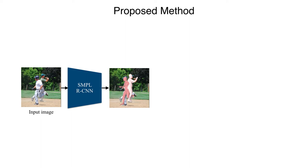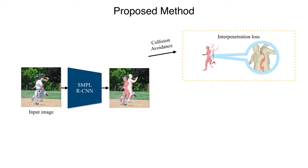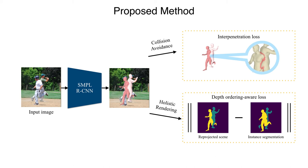Our model follows the RCNN paradigm, introducing two novel geometric losses. First, we penalize interpenetrations among the reconstructed people using a distance field-based loss. This loss function requires no additional annotations and encourages the network to regress meshes that do not overlap with each other.